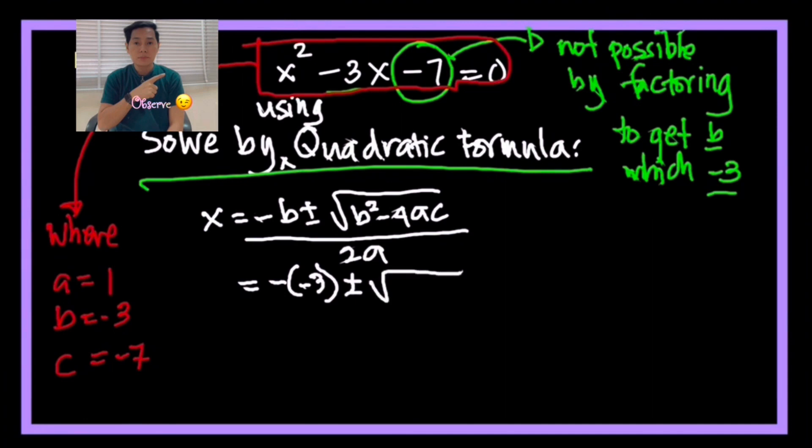What we are going to do is just to substitute the values a, b, c in the given formula. We have to be very careful here in substituting the values. In the denominator, you have 2 times the value of a which is equal to 1, so 2 times 1.